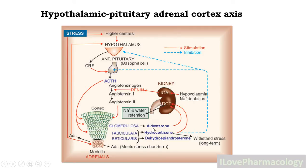ACTH is responsible for stimulation of the adrenal cortex. In the adrenal cortex there are three layers: glomerulosa, which is responsible for production of the mineralocorticoid aldosterone; fasciculata, which is responsible for secretion of hydrocortisone; and reticularis, which is responsible for secretion of dehydroepiandrosterone. Aldosterone acts on the distal convoluted tubule, leading to sodium and water retention.